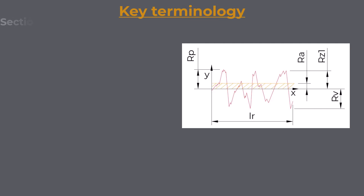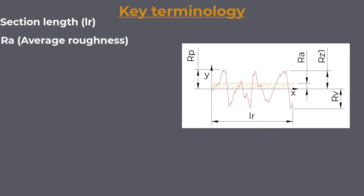Key Terminology — Section Length LR: The length over which the surface profile is evaluated. It's a critical parameter when measuring and interpreting roughness values. Different section lengths can yield different roughness values for the same surface, so specifying and standardizing the sampling length is essential. Note: ISO standard defines units of roughness measurements as micrometers. RA — Average Roughness: The arithmetic average of the absolute values of the profile height deviations from the mean line, measured within the section length.